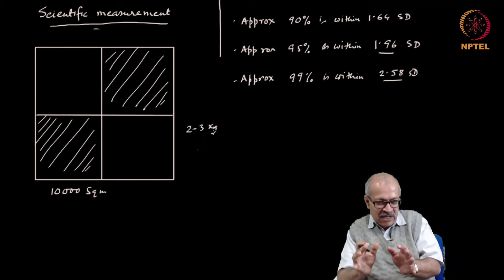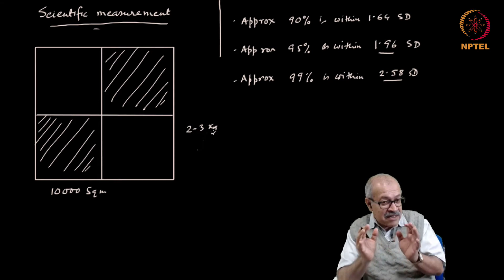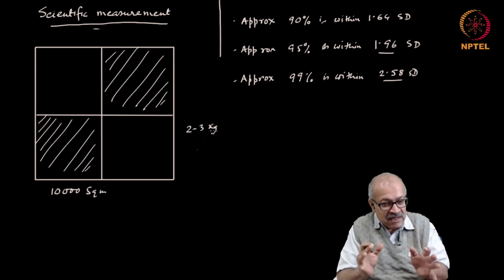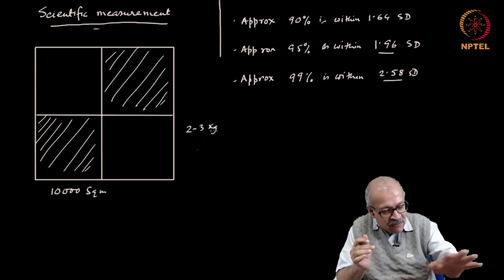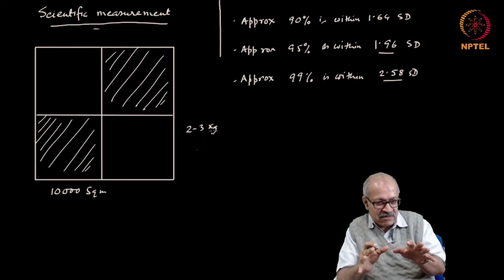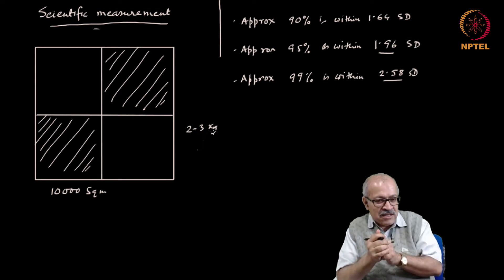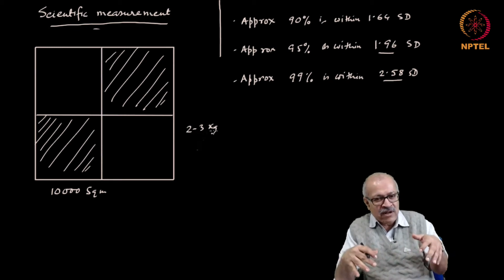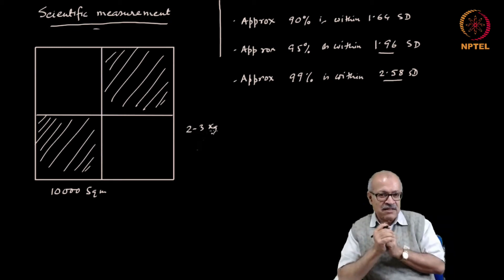When you get the 2 to 3 kgs, remember then it has a reliable mixture. It is a reliable mixture of soil collected from all parts of the field as well as from the top, middle and bottom. And therefore it is a reliable sample from the field. After this 2 to 3 kgs is obtained, it is ground and sieved through a 2 millimeter sieve and finally, what is collected that is what is tested.